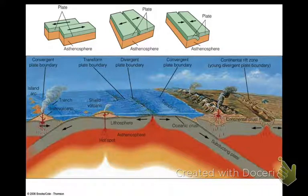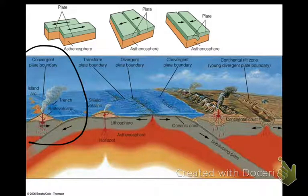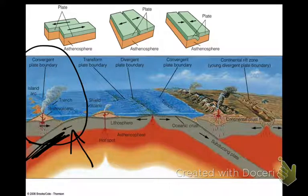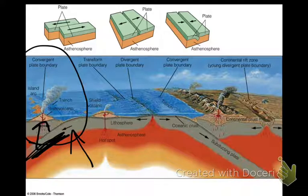Right here we have an oceanic-oceanic convergent boundary. You can tell because you have two ocean plates that are coming together. You have the trench going above the subduction zone. As that plate gets melted, it goes up and turns into volcanoes. So that's your oceanic-oceanic boundary.